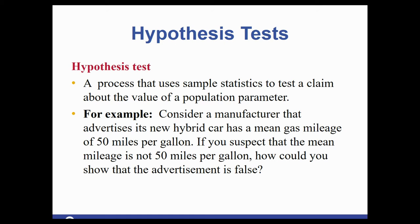To give you an idea of the kinds of examples that come up, here's one to visualize. Consider a manufacturer that advertises its new hybrid car has a mean gas mileage of 50 miles per gallon. If you suspect that the mean mileage is not 50 miles per gallon, how could you show that the advertisement is false?